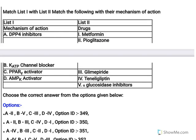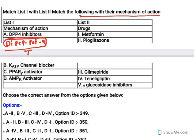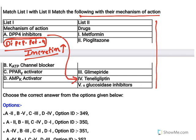Now match list one with list two — this is about mechanism of action. DPP-4 inhibitors: DPP-4 is dipeptidyl peptidase-4, an enzyme which metabolizes incretins. Incretins are insulin secretagogues, so when you inhibit that enzyme, incretin levels increase, which increases insulin secretion. This is used to treat diabetes mellitus. All gliptins, such as teneligliptin, are dipeptidyl peptidase-4 inhibitors.